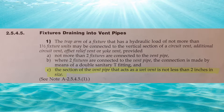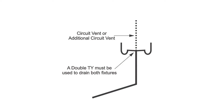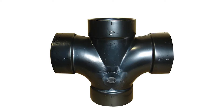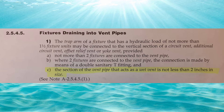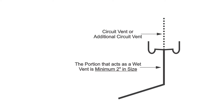Part B: where two fixtures are connected to the vent pipe, the connection is made by means of a double sanitary T fitting. So we need to connect these two fixtures together with a double TY — they need to be joined at the same height, so a double TY it is. And Part C: the section of vent pipe that acts as a wet vent is not less than two inches in size. This looks exactly like the additional circuit vent we just talked about — right from the trap arms all the way to the circuit-vented branch will be two inches in size minimum.